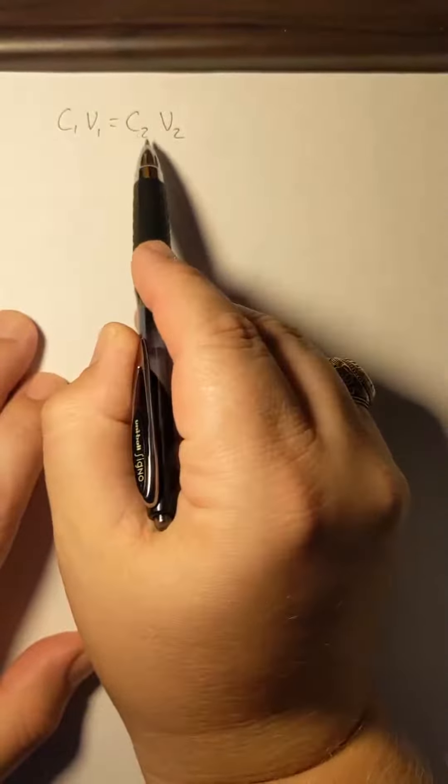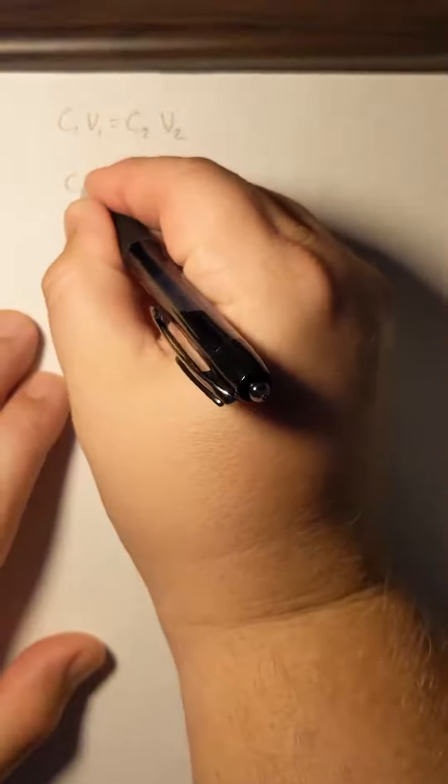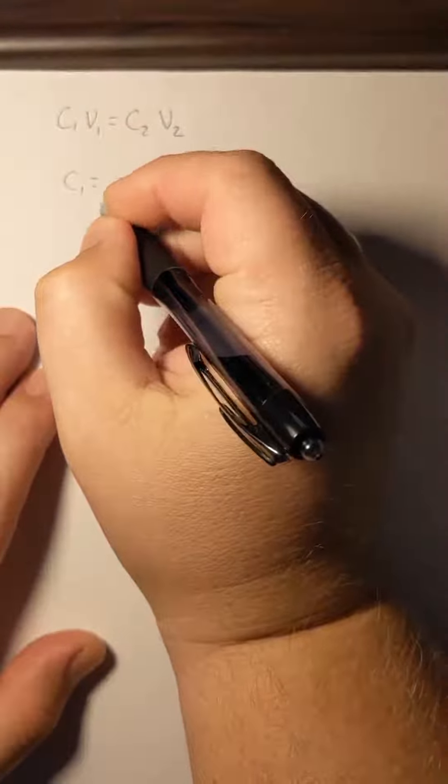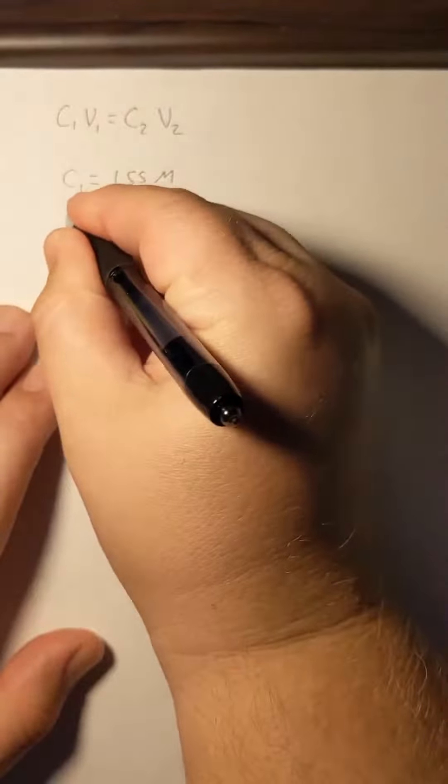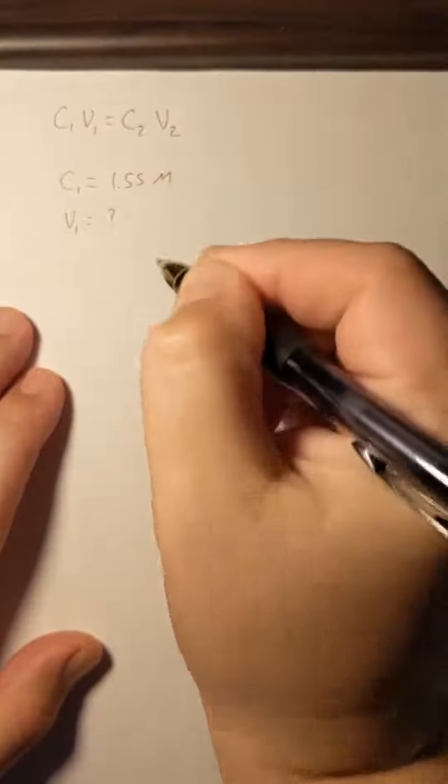So we're going to use the equation C1V1 equals C2V2. C1 is always our most concentrated solution. That's going to be the 1.55 moles per liter. V1, we don't know.